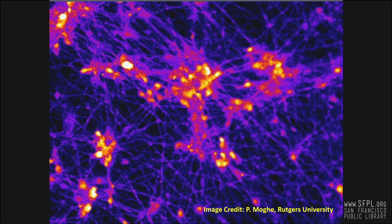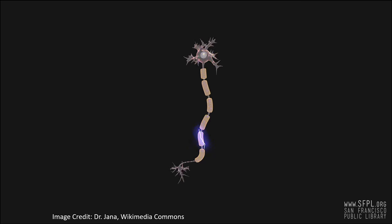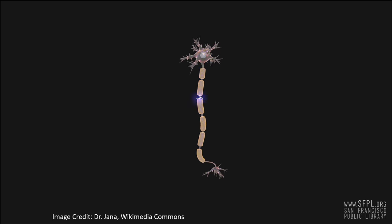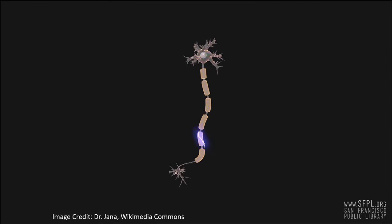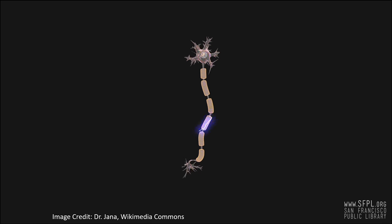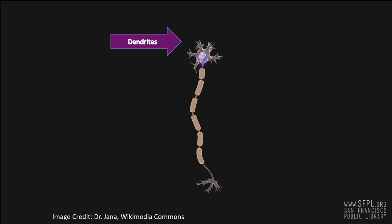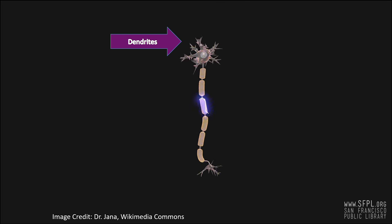A neuron or a nerve cell is the basic unit of the nervous system — a cell that carries electrical impulses. The dendrites are the branches that receive chemical messages from other neurons, which are converted into impulses.